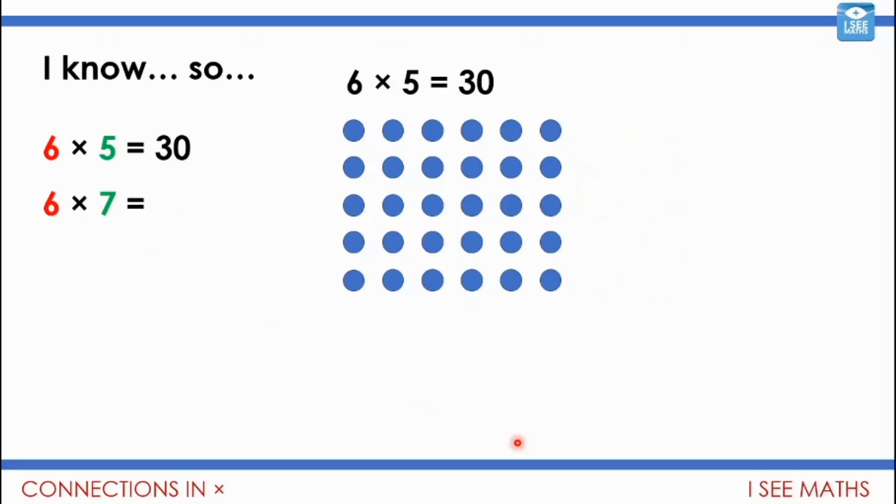Let's have a look at this one. So six fives equals thirty. How can you use that to work out six sevens? Pause the video. How's the picture going to change? How can you use one fact to work out the other one?